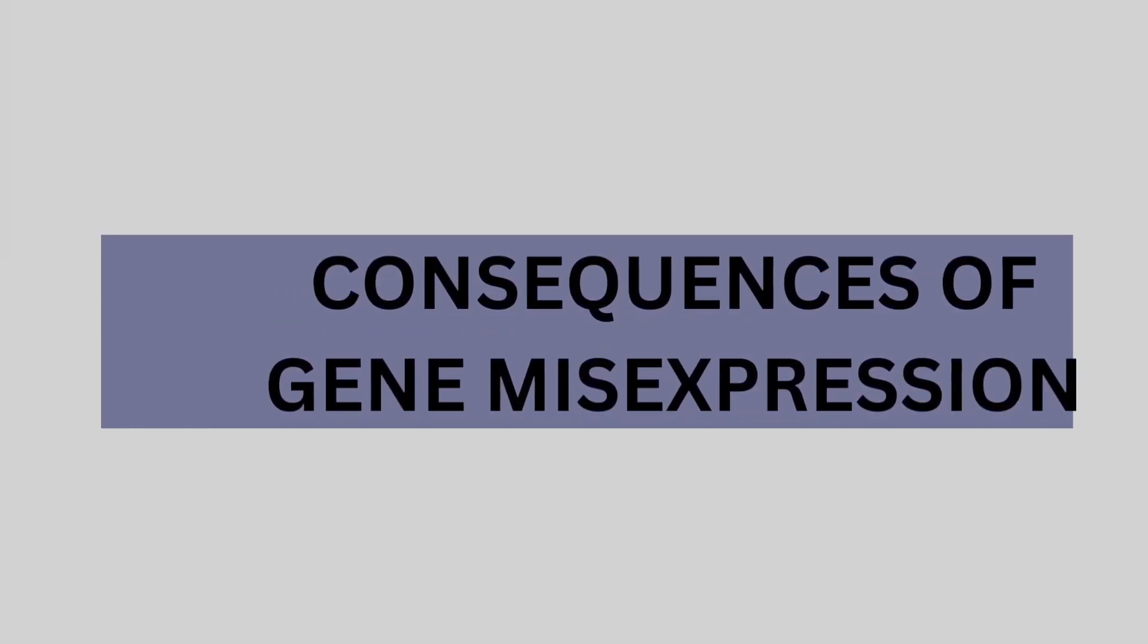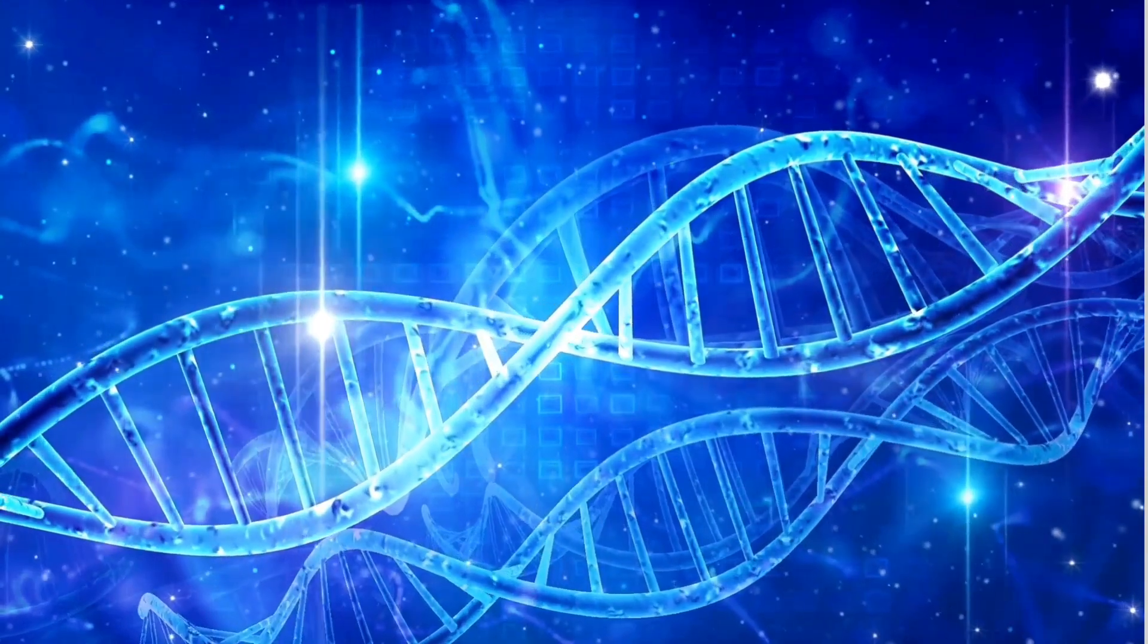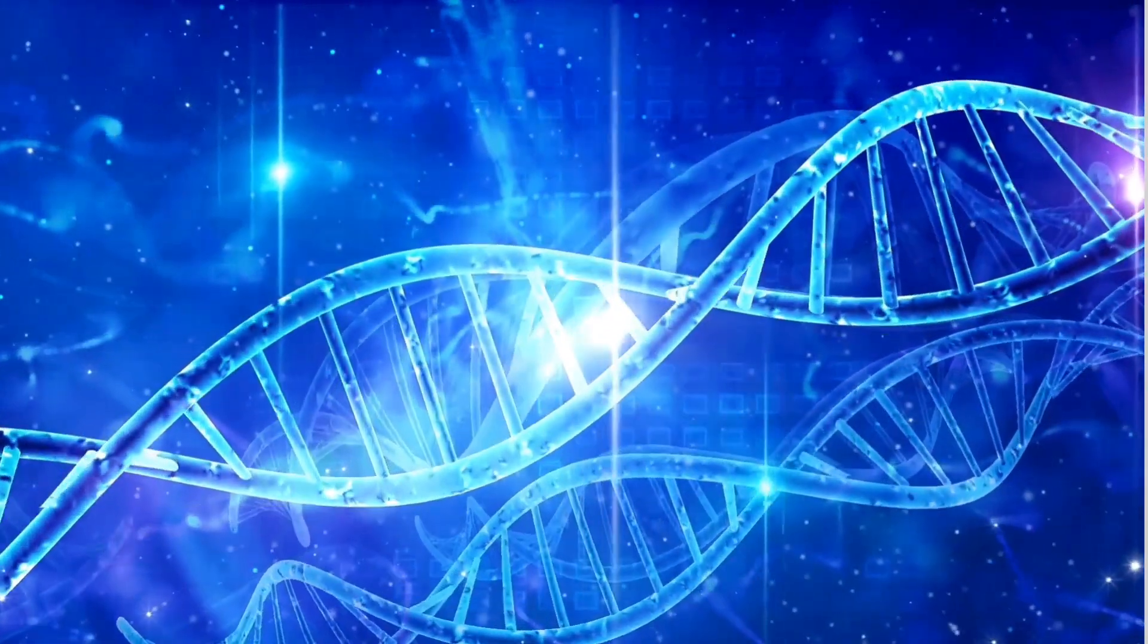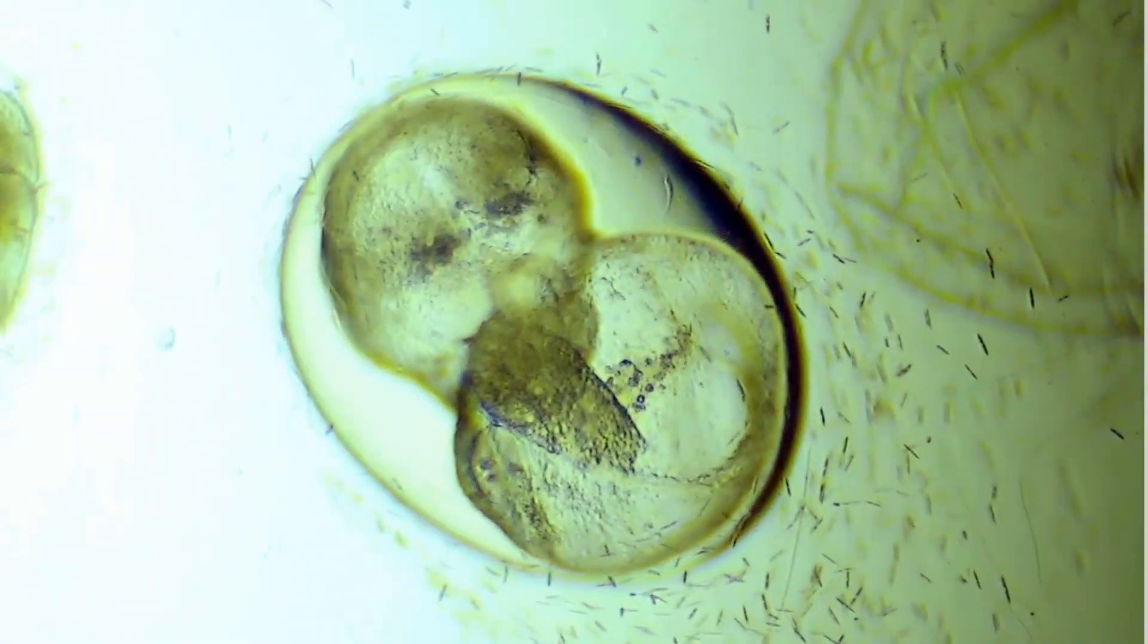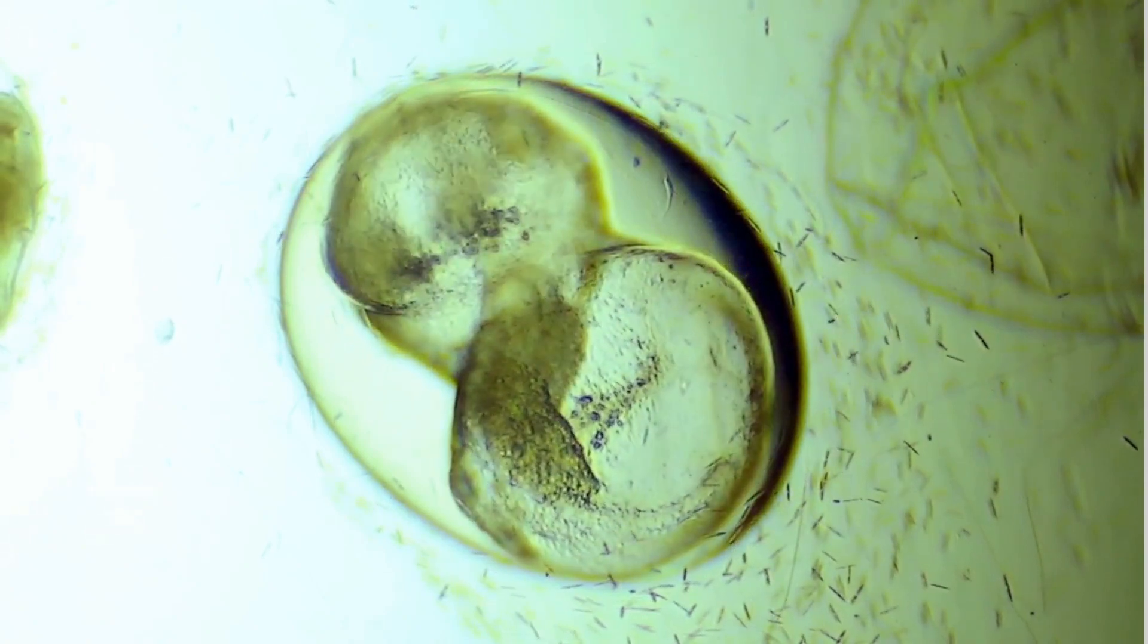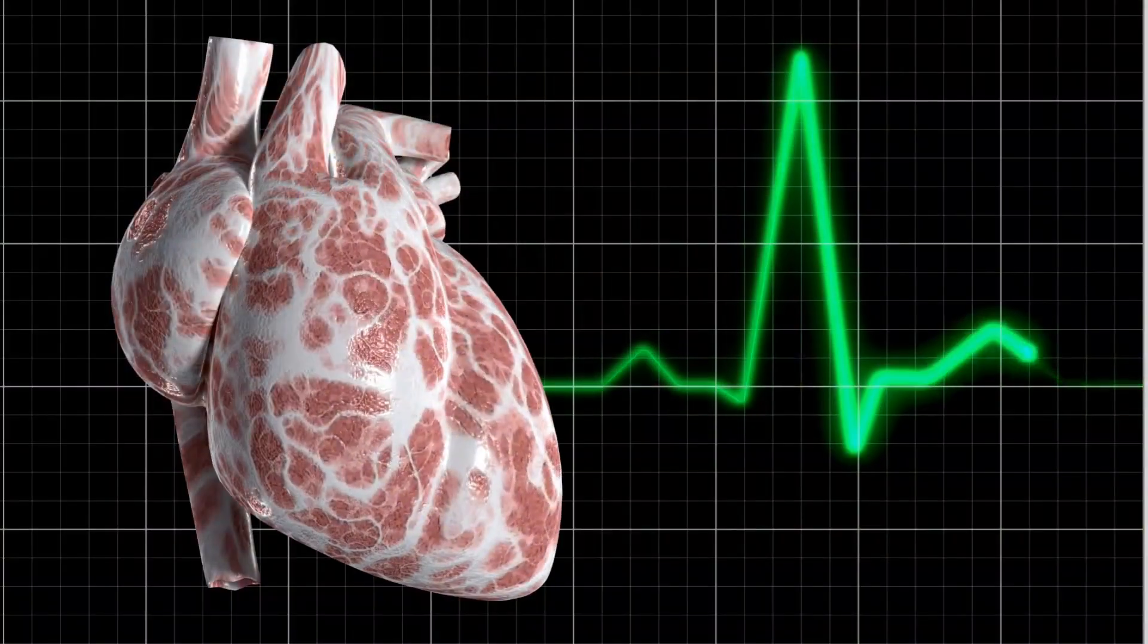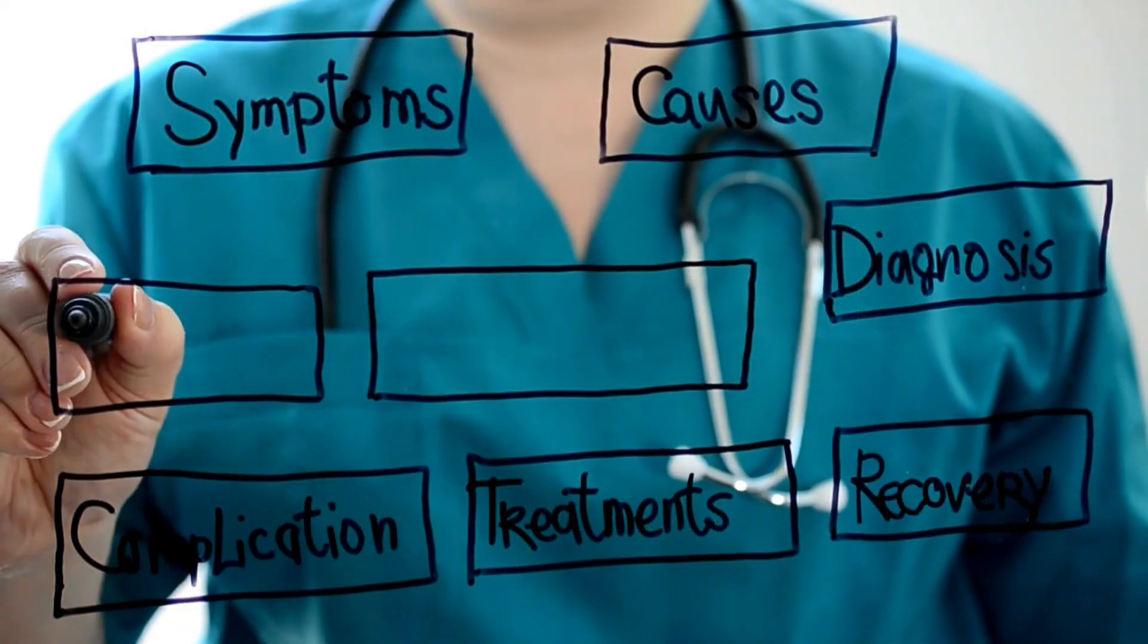This leads us to a crucial point. When these essential genes do mis-express, the consequences can be severe. Imagine a tiny error in a gene that controls brain development or heart function. It could be the trigger for serious, even life-threatening conditions.